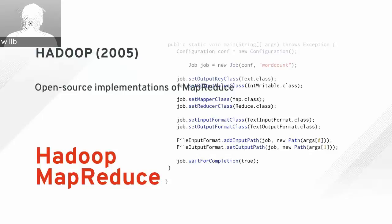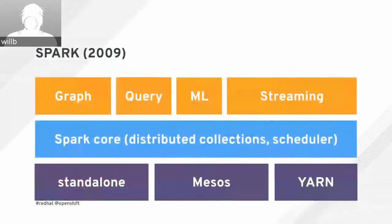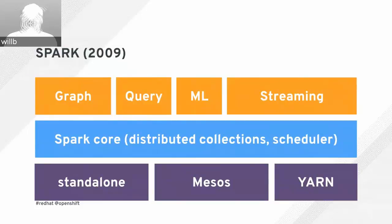A year after the MapReduce paper, the Hadoop project produced open-source implementations of these ideas — a distributed storage system and a programming interface. This programming model set a course for a huge segment of the industry for the last decade. The power of HDFS as a data federation solution and the promise of massive scale-out were extremely attractive, and a lot of smart people began storing their data in HDFS and developing libraries atop this abstraction.